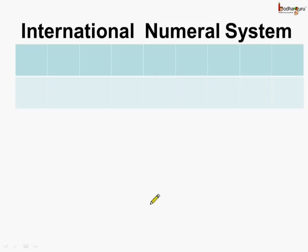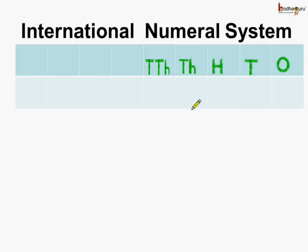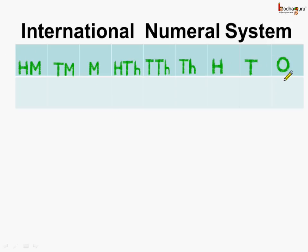Confused? Let us put the place value chart according to the international numeral system. We always start from the smallest digit value place, which is ones, followed by tens, then hundreds, then thousands, then ten thousands, followed by hundred thousands, then millions place, then ten millions place, and then hundred millions place. This is the place value chart according to the international numeral system.